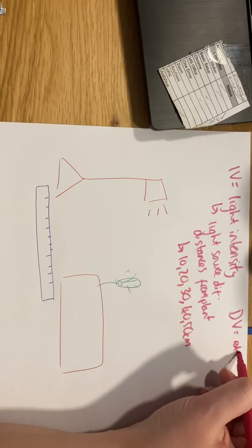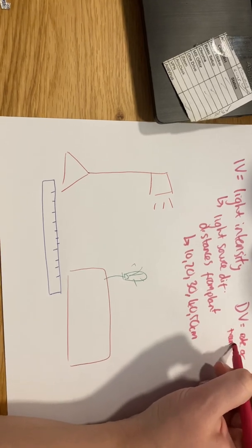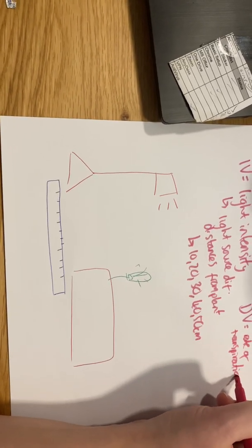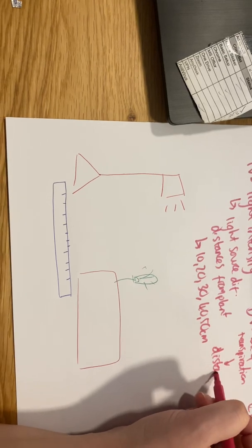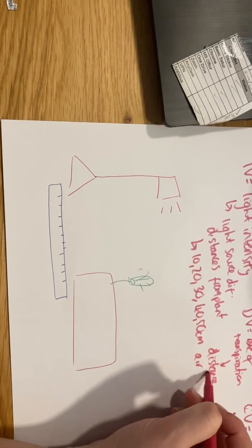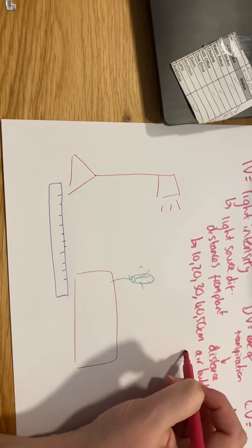Dependent variable: what are we measuring and how we're going to measure it? We're measuring rate of transpiration, and we're going to measure it by the distance air bubble moved in capillary tube.